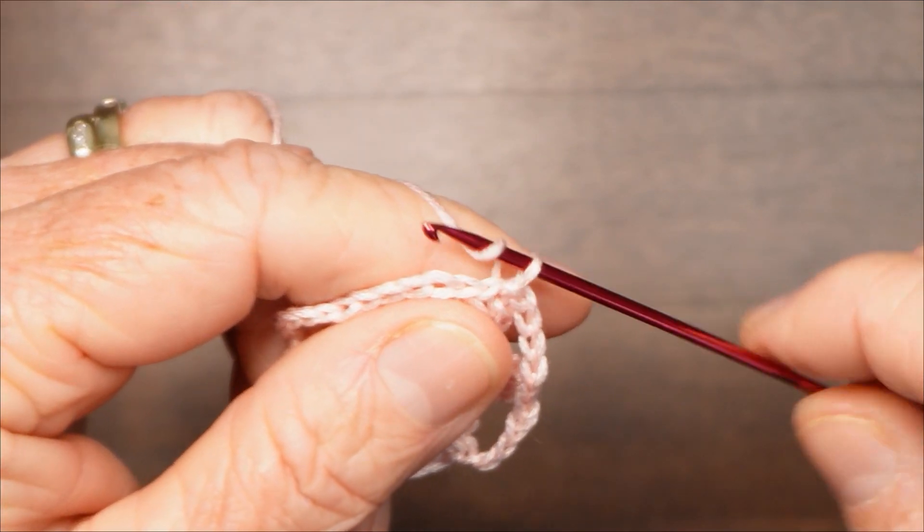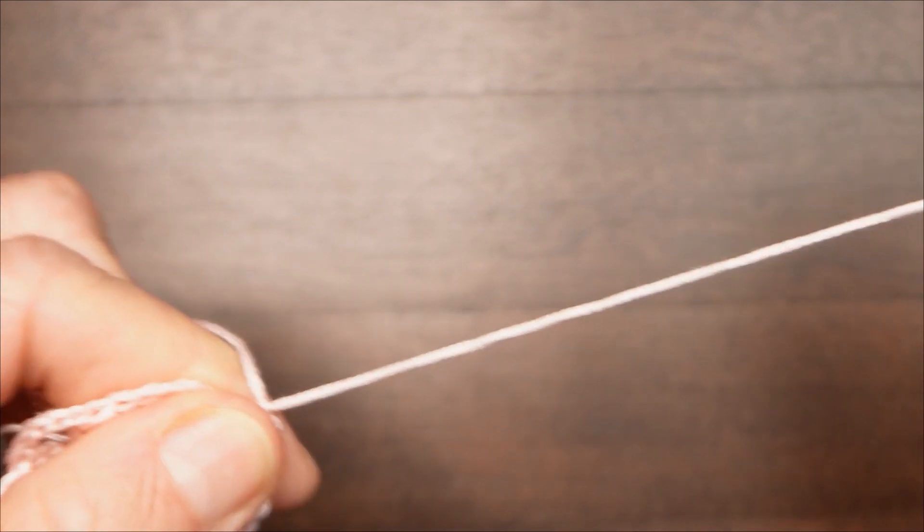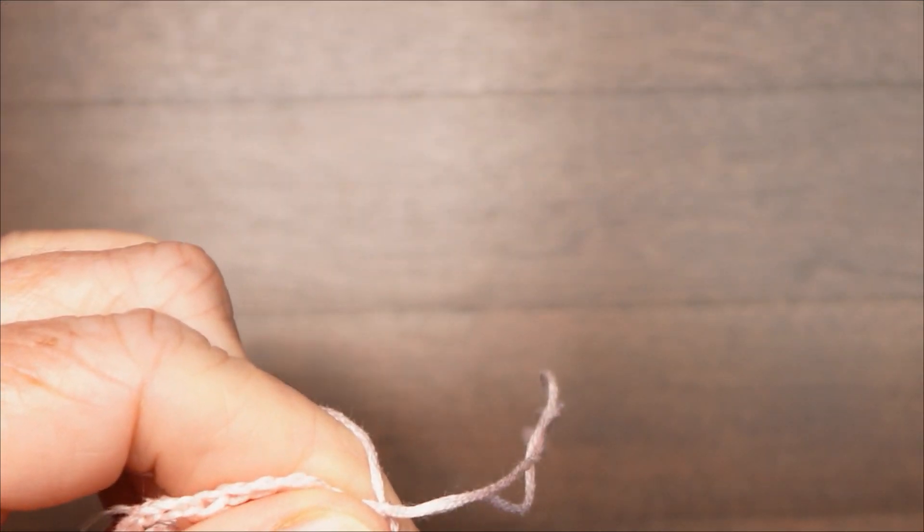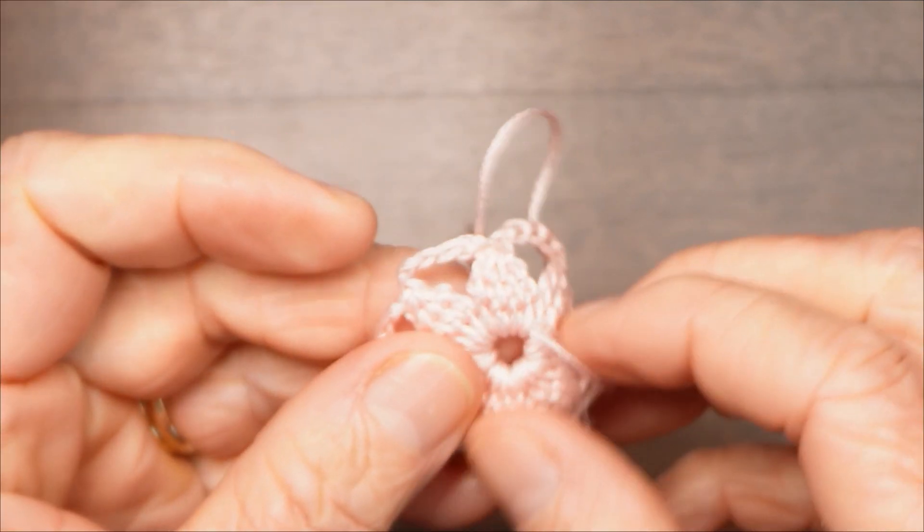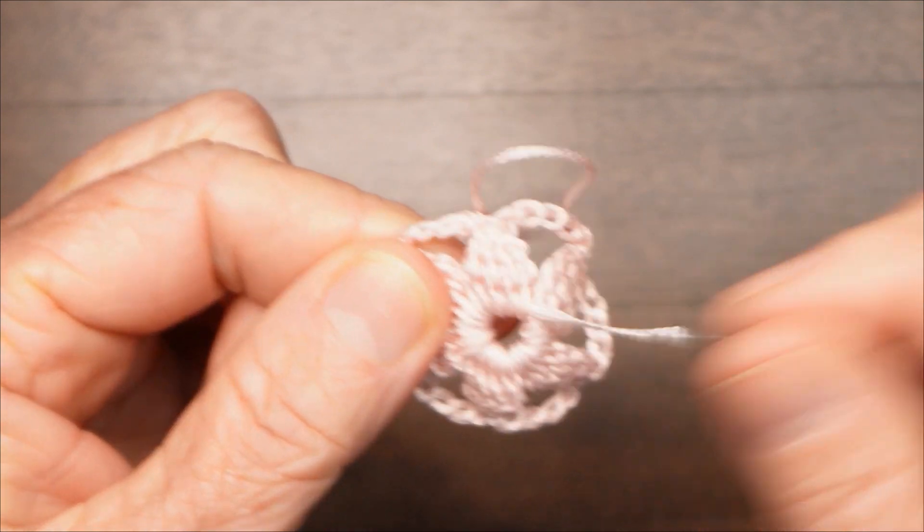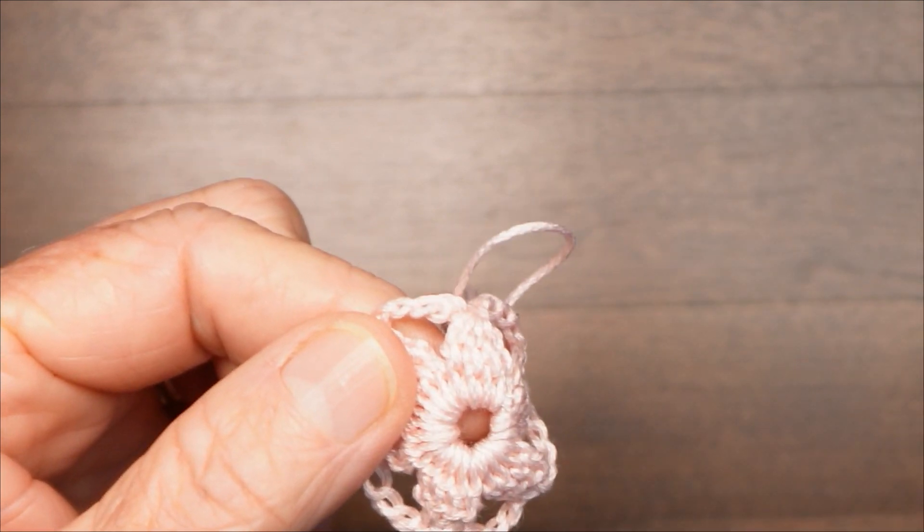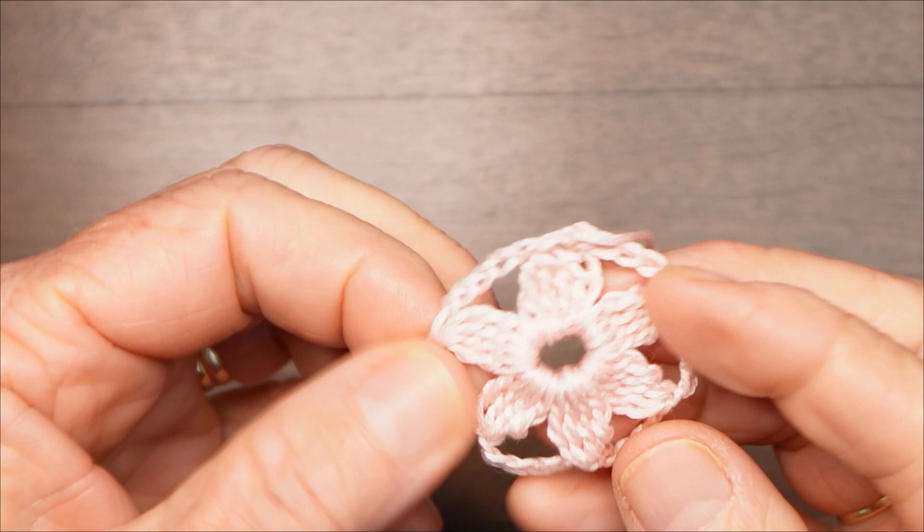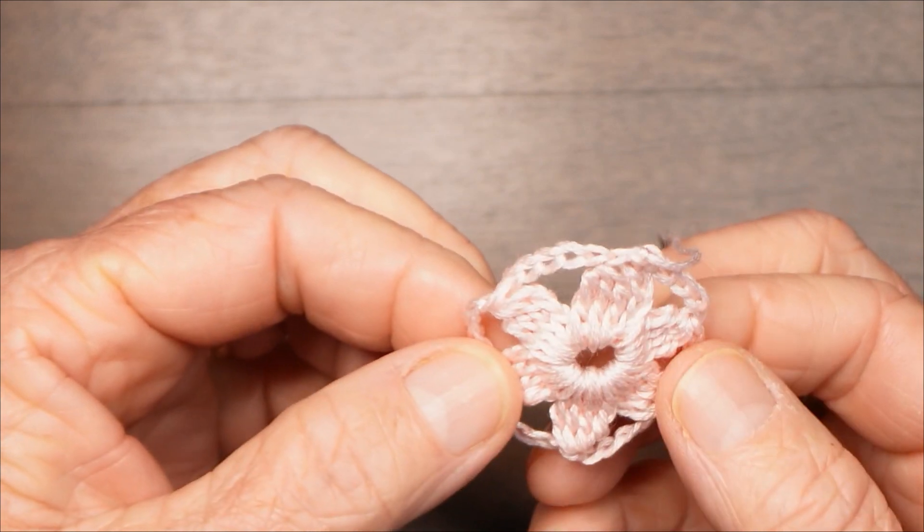I'm going to pull another loop through to fasten, and leaving a strand three or four inches long, I'm going to cut it at that point. There we go. And I worked over the other end as I went around the ring. If you didn't do that, you'll need to work it off at this point, but I have already worked over it so I'm going to snip it off. And there's the flower, little six petal flower, four trebles worked together for each petal.